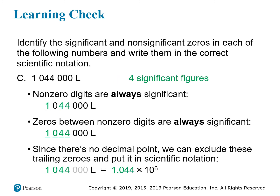In this case, we keep the non-zero digits as well as the zero between them, so you end up with four significant figures. Placing the decimal to the right of the first digit, you get a coefficient of 1.044. Then we have to see how many places we moved — the decimal moved six places. Since the original number was much greater than 10, this is a positive 6. So the answer in scientific notation is 1.044 times 10 to the 6th power.